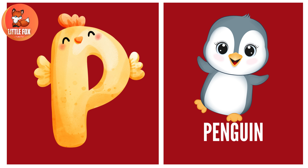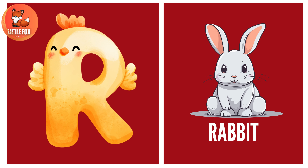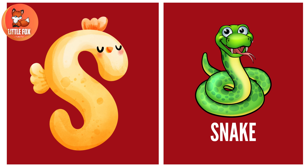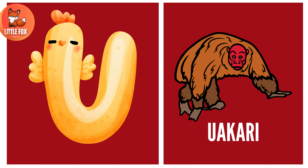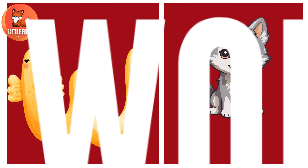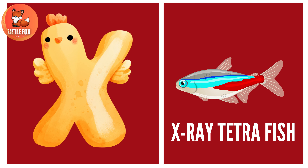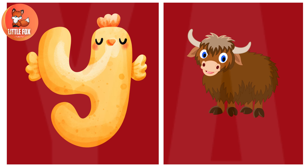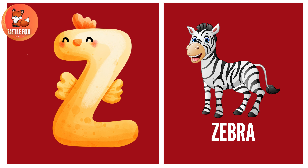P for Penguin, Q for Quokka, R for Rabbit, S for Snake, T for Tiger, U for Uakari, V for Vulture, W for Wolf, X for X-ray Tetra Fish, Y for Yak, Z for Zebra.